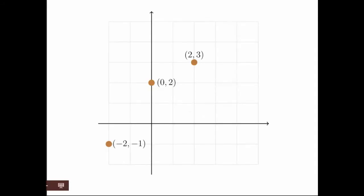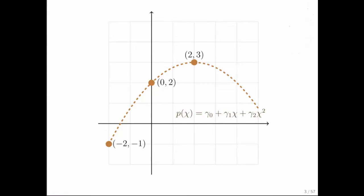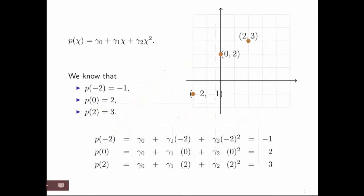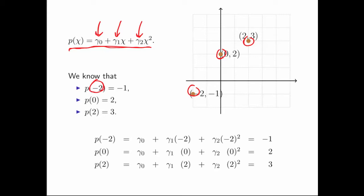We have three points in two-dimensional space, and what we would like to do is determine a second-degree polynomial that passes through all of these points. We have the three points, and we would know that we want our polynomial to look like this — so what we need to determine are these coefficients. We know that when you plug minus two into this polynomial, you should get minus one.